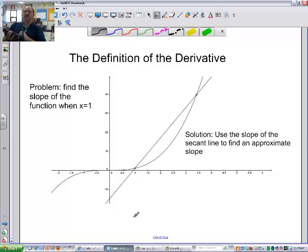So we're going to start with what's called the definition of the derivative. And the definition of the derivative, well, it helps us to find answers to questions like, we're going to find the slope of this function right here when x is equal to 1. Okay, so we're going to find the slope.